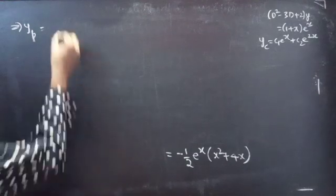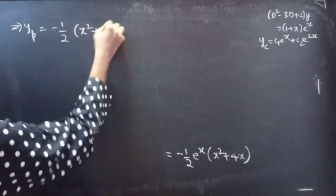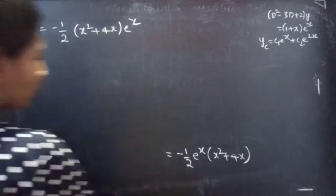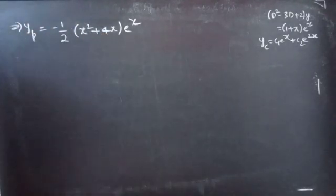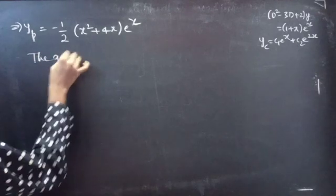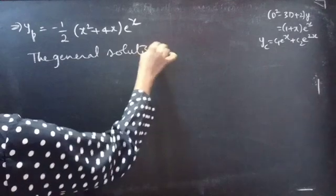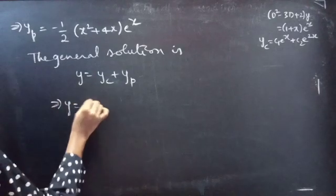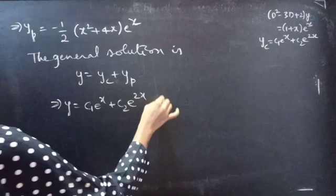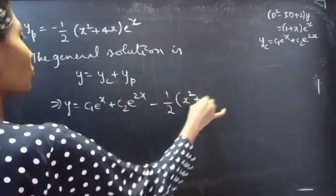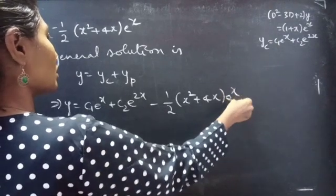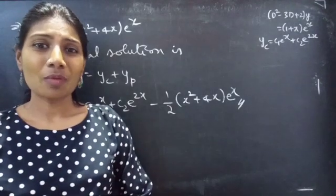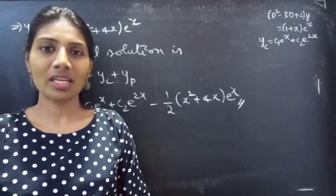So yp = -(1/2)(x² + 4x)eˣ. Now we have both yc and yp. The general solution is y = yc + yp = c₁eˣ + c₂e^(2x) - (1/2)(x² + 4x)eˣ. This concludes the problem. We have seen a problem from higher order linear differential equations in this video. Hope you understand. See you in the next video. Bye-bye.